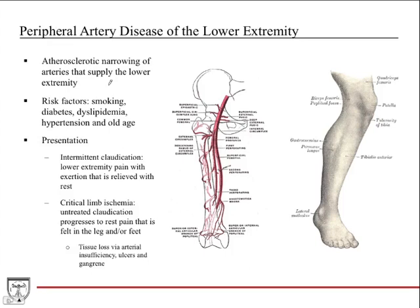Peripheral artery disease of the lower extremity — also very high yield for board exams. It's atherosclerotic narrowing of arteries supplying the lower extremity, causing limb ischemia and potentially requiring amputation — a very common problem in the United States. Risk factors are very similar to heart disease: smoking is the number one risk factor, diabetes is another huge one, then dyslipidemia, hypertension, and older age.